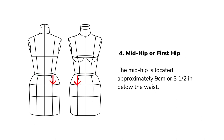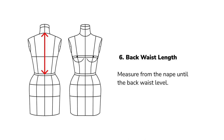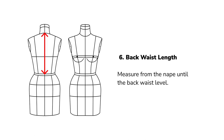Mid hip or first hip: the mid hip is typically located approximately 9 centimeters below the waist. Front waist length: measure from the center of the collarbone to the front waist level or the navel. Back waist length: measure from the nape of the neck to the back waist level.